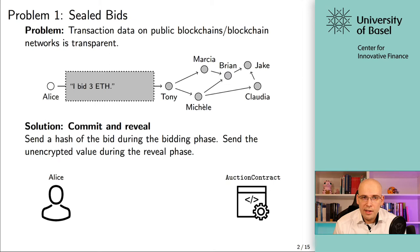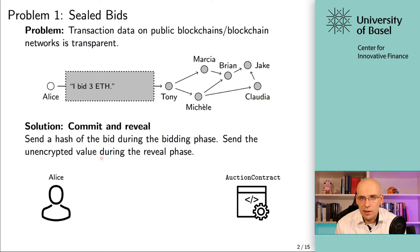The way we're going to solve that is through a commit and reveal scheme. On a very high level, there are two steps. In the first step — the bidding phase — you send a hash of the bid. You basically commit to a certain bid without revealing it; that's what you use the hash value for. Then later on, in the reveal phase, you send the unencrypted clear-text value to the smart contract. It gets evaluated whether, when hashed, it corresponds to the hash value you committed earlier. So you're revealing the information — that's why we call this second step the reveal phase.